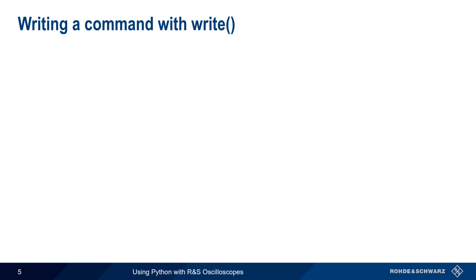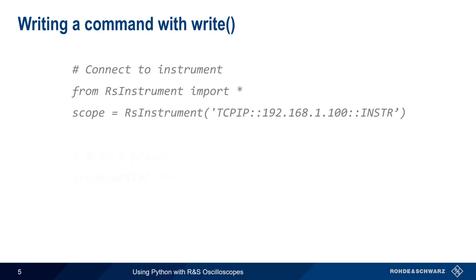Here's an example of using write(). After connecting to the scope, we can preset or return it to its default settings by sending the string *RST. And we can have the scope auto-set, or attempt to automatically configure basic acquisition settings, by sending the string autoscale. We use write() because in both cases, we don't need and aren't expecting any response from the scope.